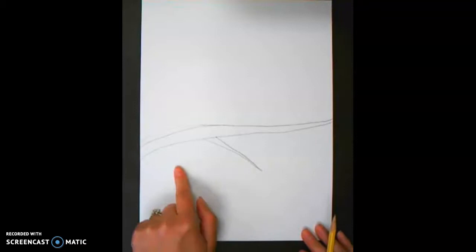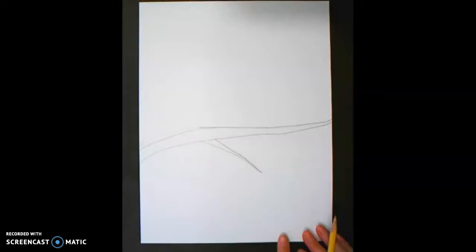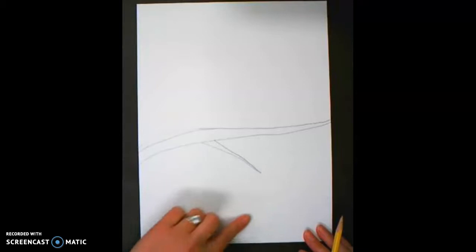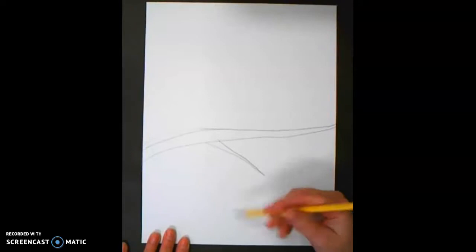Next you're going to make a branch that comes up from the bottom of our page. I have a lot of open space over on my left side, so I'm going to put my branch going in this direction. If you have more space on this side, you could have your branch going up in that direction. It is up to you. You are the artist.